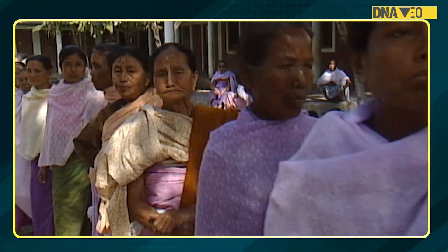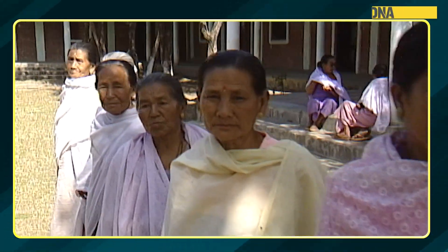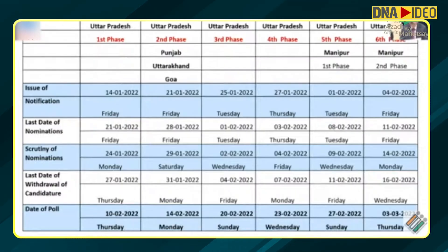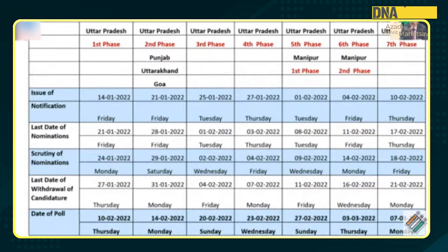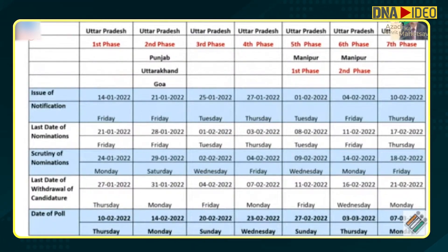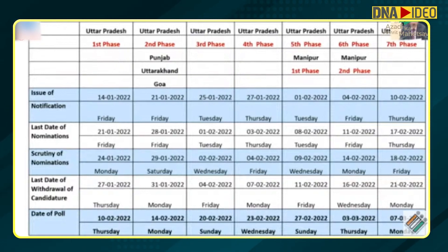The sixth phase poll date is 3rd March, that is Thursday — completing Manipur's second phase as well. For Uttar Pradesh seventh phase: issue of notification 10th February, last date of nominations 17th February, scrutiny of nominations 18th February, last date of withdrawal of candidature 21st February, and date of poll 7th March. So on 7th March all polling will be over, and the date of counting is 10th March 2022.